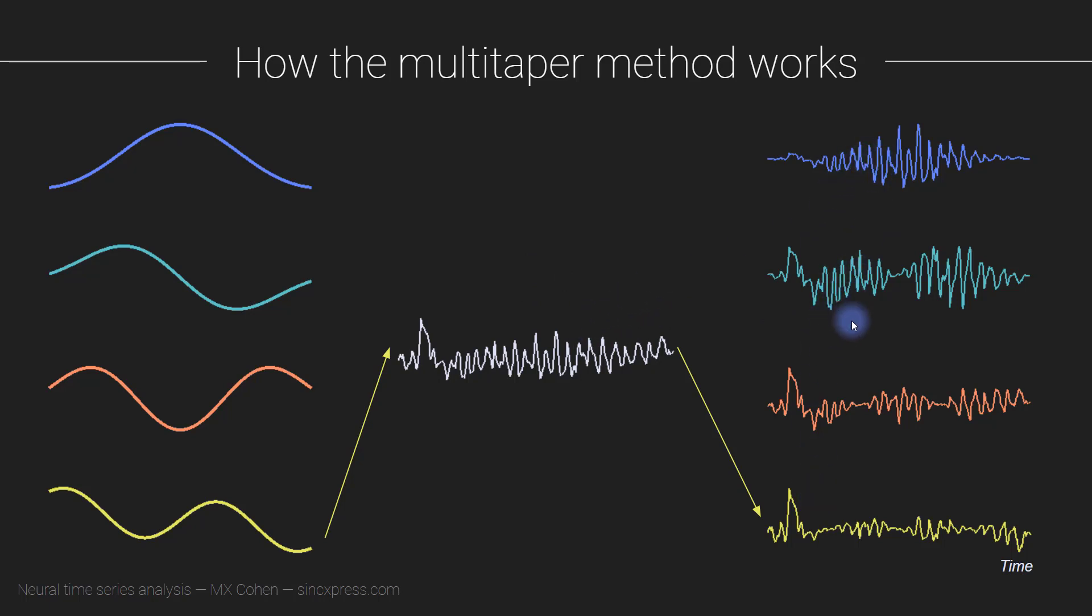Well, they're not really different, they come from the same time series, but they are tapered in different ways. So different features of the signal are highlighted. So this is how we start with these tapers, and then this time series, and we get these resulting tapered time series.